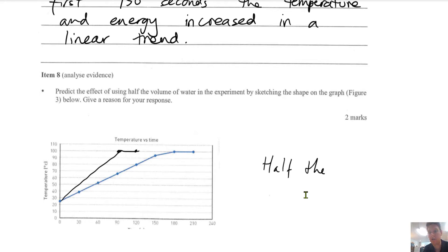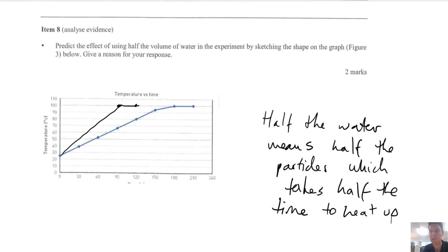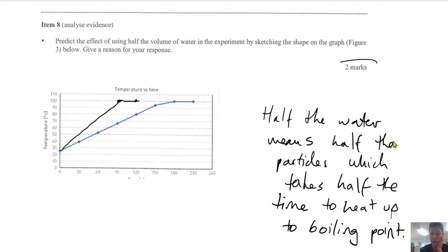And give you a reason. Half the water means half the particles, which takes half the time to heat up to boiling point. So yeah, that's the two marks. The graph halfway. And the explanation. Half the particles means half the time to heat up. The boiling point, so it heats up quicker.